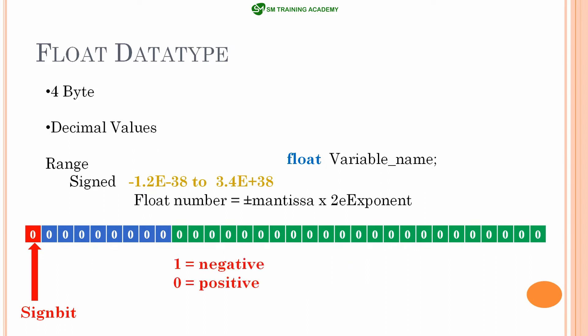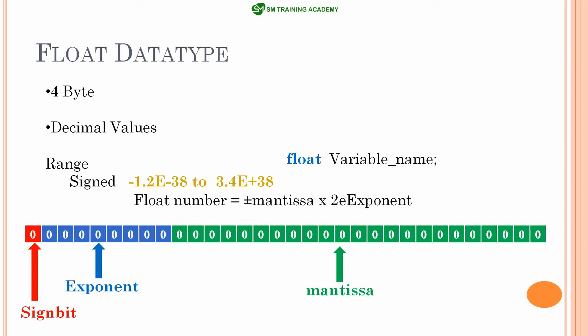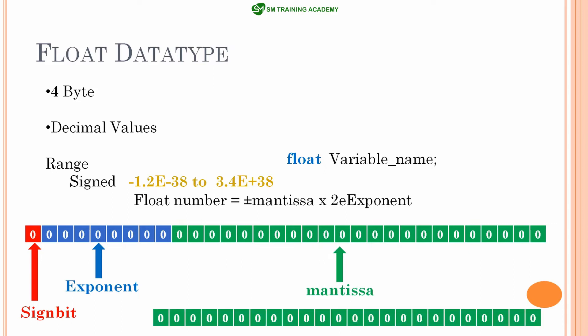The sign bit indicates whether the number is positive or negative. When the sign bit is 1, the number is negative; when it is 0, the number is positive. The mantissa component has a total of 22 bits, of which 21 are visible within the 32 bits. The MSB of the mantissa is always 1 and is hidden, but it is used when calculating the decimal point number.